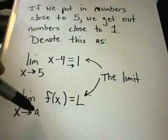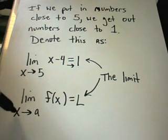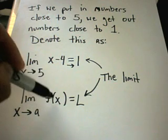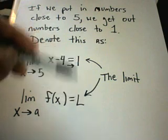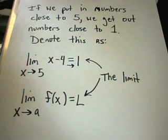In general, we write the limit as x approaches a. So we're taking x coordinates close to something. We're plugging them into our function, and we get some number out. The number out that we get is known as the limit of the function.